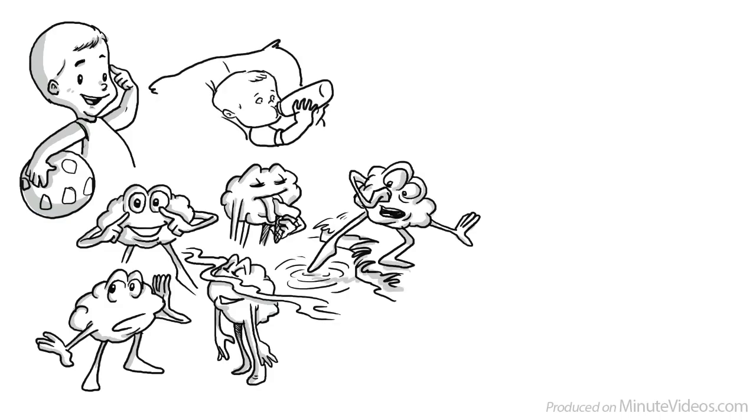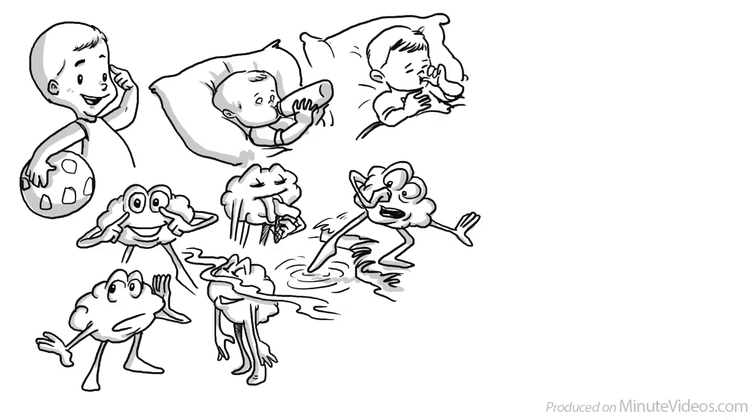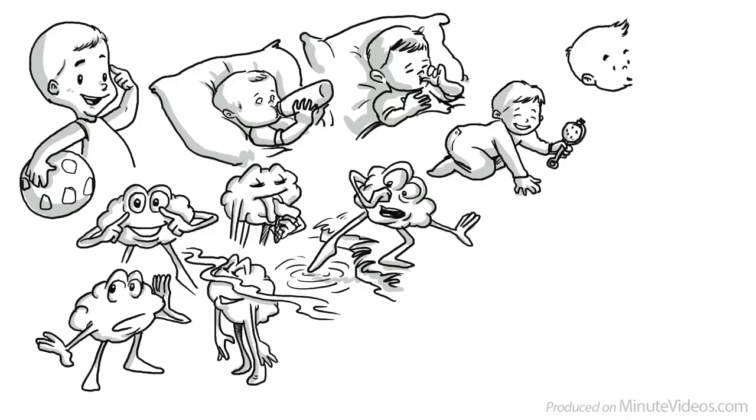First, we start with simple reflexes and soon after we develop our first habits. From four months old, we become aware of things beyond our own body. And then as we get older, we learn to do things intentionally.